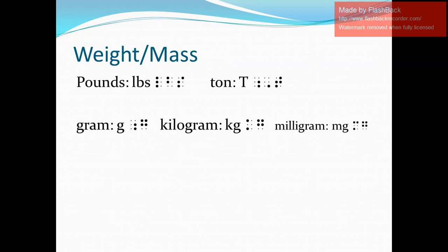For our next set, we have the units of weight or mass. So we have the abbreviations for pounds (letters L, B, and S), for ton (letter T alone), for gram (letter G alone), and for kilogram (letters K and G).